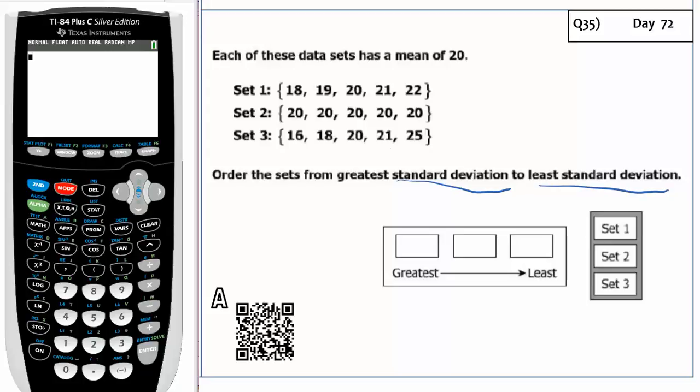So the greatest standard deviation means they're more spread out. The least standard deviation means they're less spread out. The one that I know for sure is Set 2 is going to be the least standard deviation because it doesn't vary at all. The standard deviation is going to probably be zero.